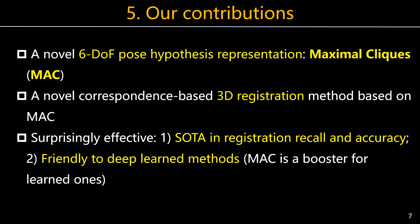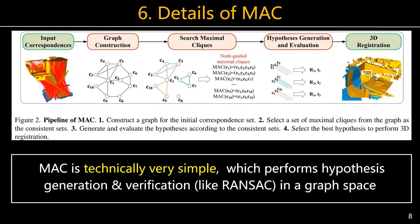So we propose MAC — a novel hypothesis generation method from correspondences with heavy outliers. We demonstrate that MAC is technically very simple but surprisingly effective. Moreover, MAC can also serve as a booster for deep-learned methods. MAC has three main steps: graph construction, searching Maximal Cliques, hypothesis generation and evaluation. MAC follows a hypothesis generation and verification pipeline, similar to RANSAC. The main novelty is to generate hypotheses from Maximal Cliques rather than random sampling.